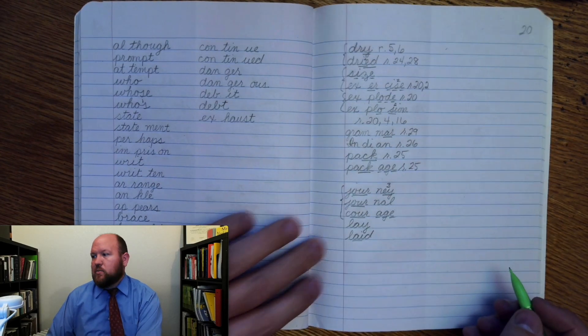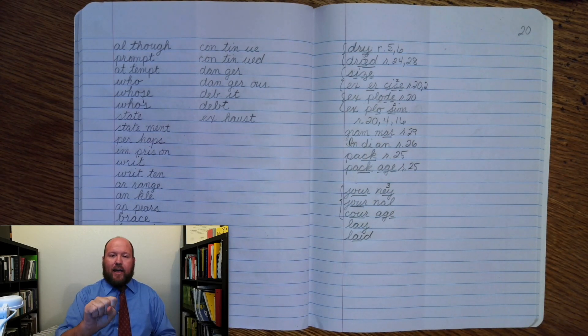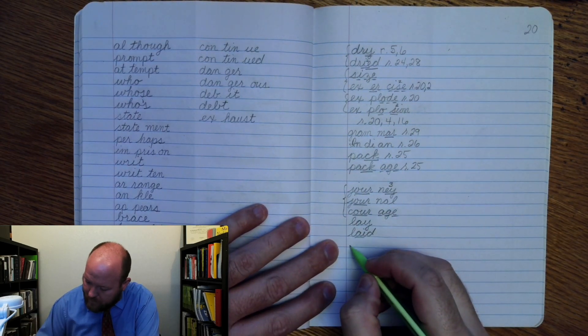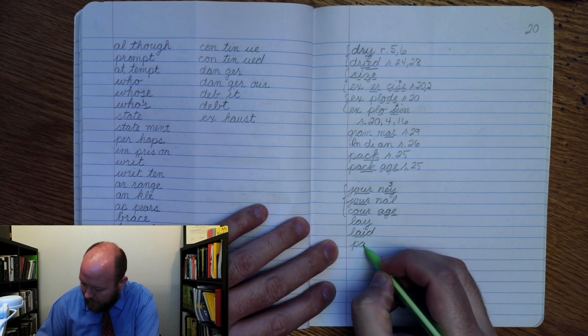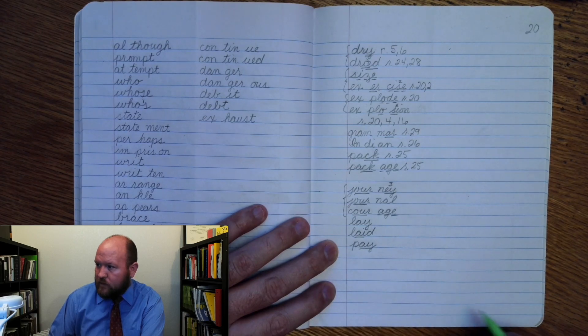The next one is pay. I want you to pay something. Pay, base word pay: P-A. Pay. You write pay: P-A. Markings: P-A once. Pay.